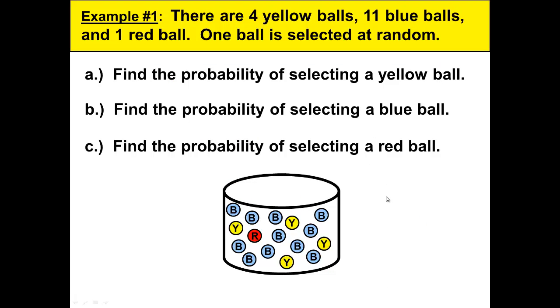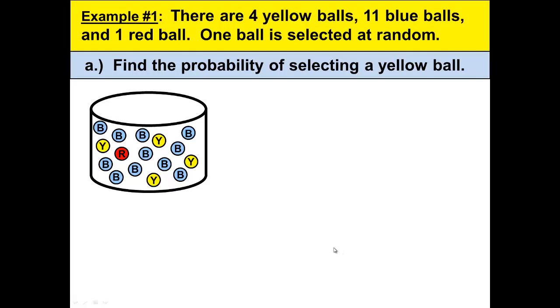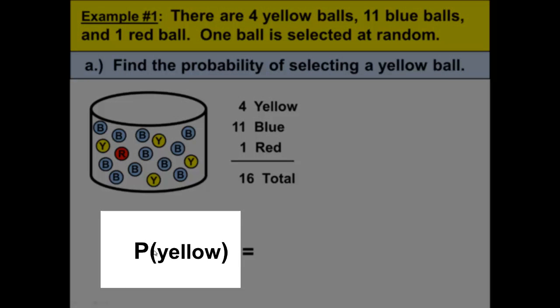Let's look at this example. There are 4 yellow balls, 11 blue balls, and 1 red ball. And 1 ball is selected at random. So we have a bucket and it has some balls in them, and we're going to randomly select 1 ball at random from this bucket. So let's look at letter A. Find the probability of selecting a yellow ball. Well, the first thing we want to do is find the total number of balls in our bucket. We have 4 yellow, 11 blue, 1 red. 4 and 11 make 15, plus 1 gives us 16 total. And notice that we're going to use the notation P for probability. Then in parentheses the word yellow to remind us that we're trying to select a yellow ball. It's just notation, but we'll use this as our official notation and we'll read that the probability of yellow equals.